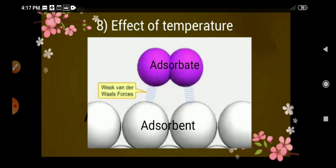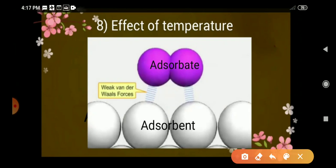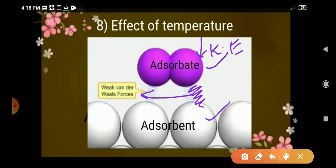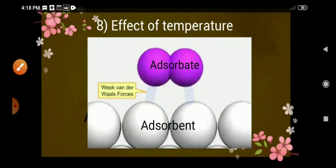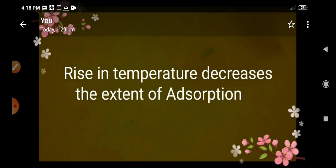Now let us see what happens when we increase the temperature. The force of interaction between the adsorbate and adsorbent is a weak van der Waals force. When the temperature is increased, the adsorbate particles gain kinetic energy and start to leave the surface. Since the force between them is weak, they can easily leave. Therefore, on increasing the temperature, adsorption decreases. So we can say that a rise in temperature decreases the extent of adsorption.